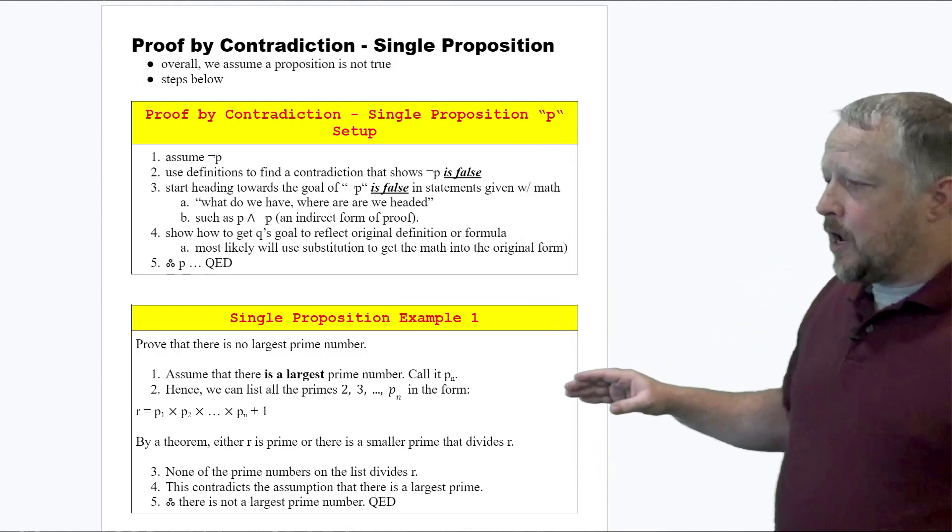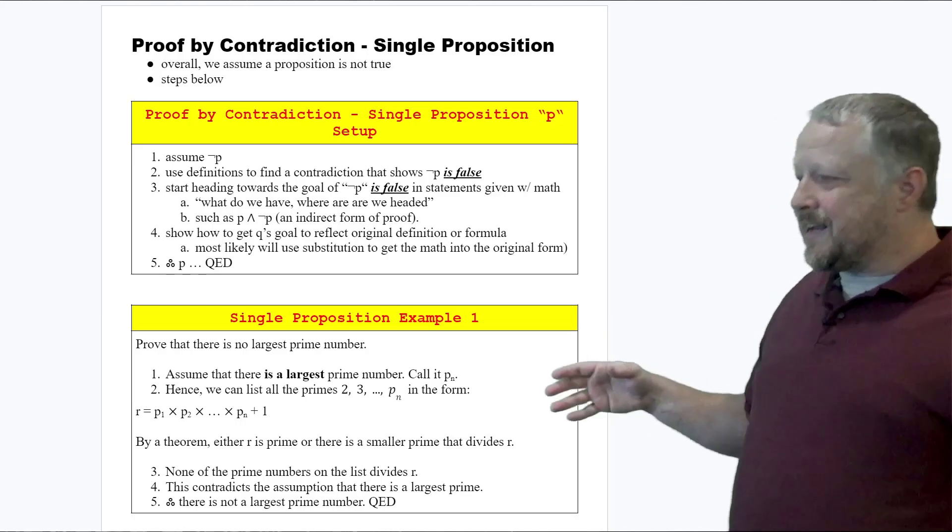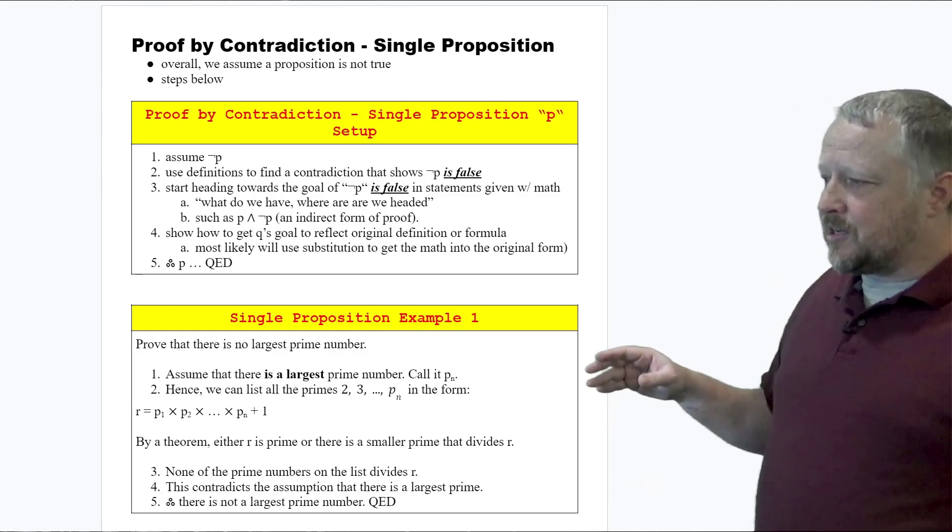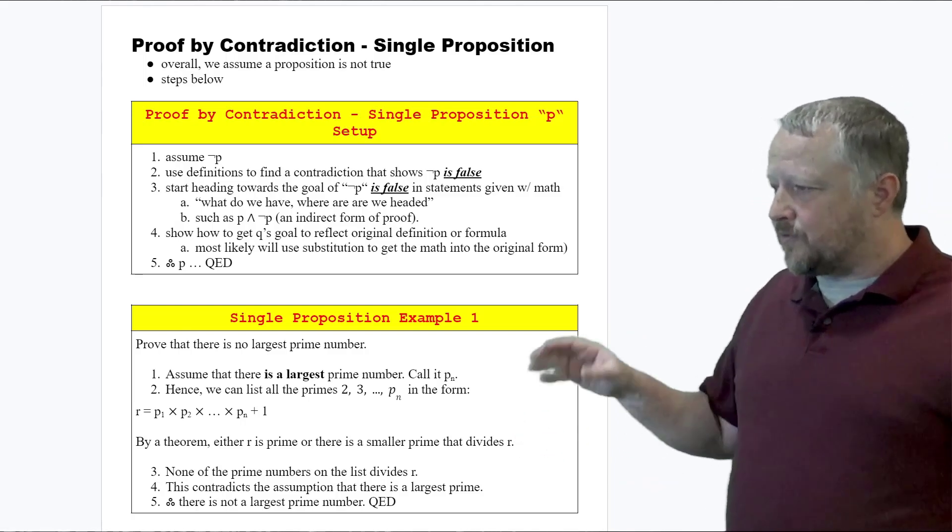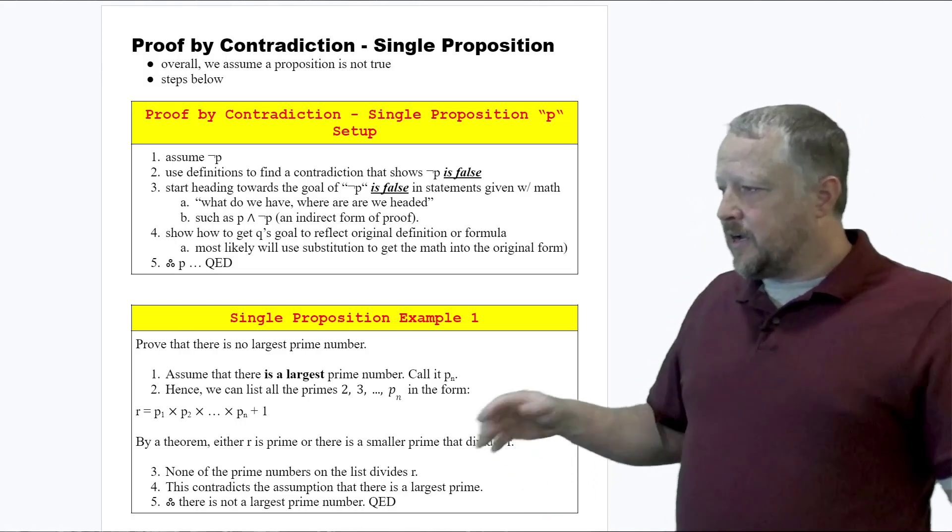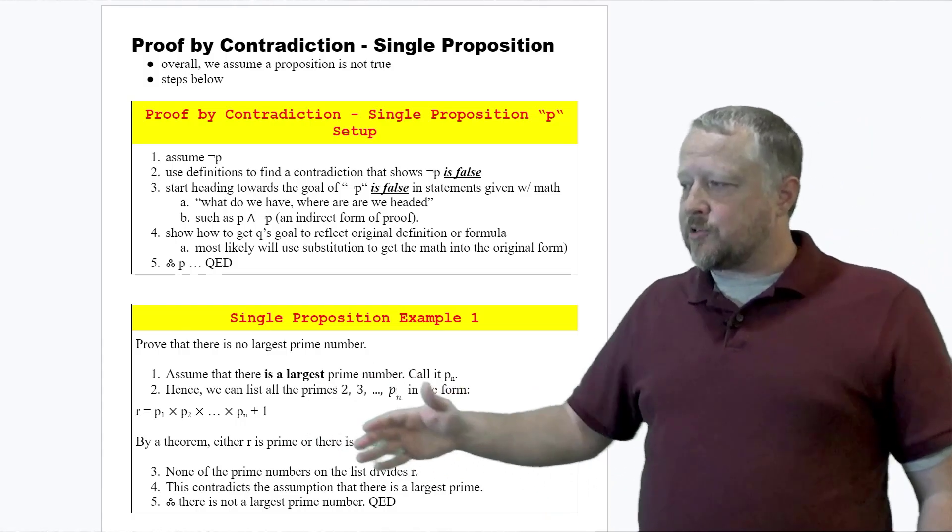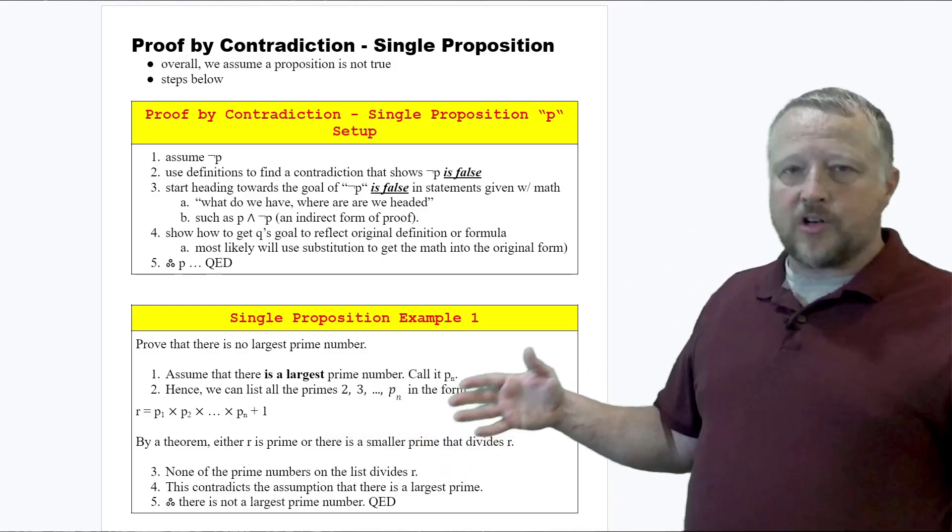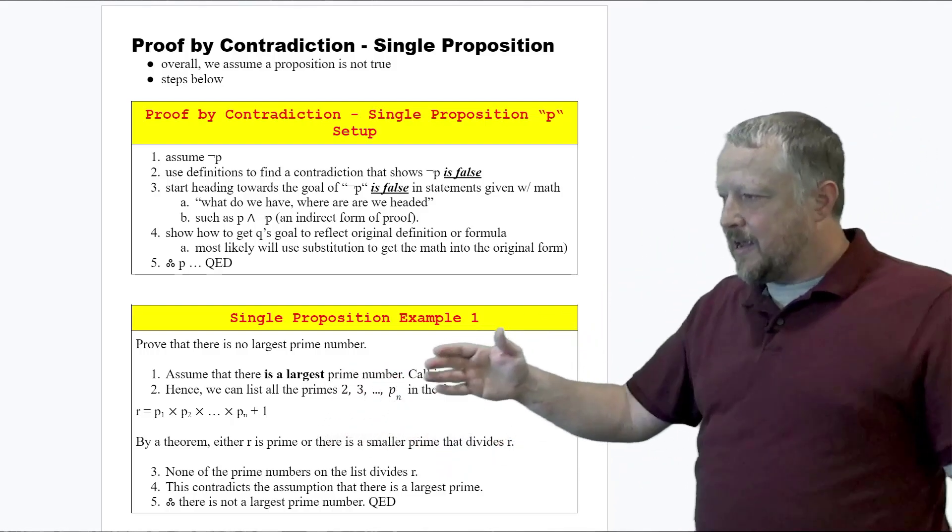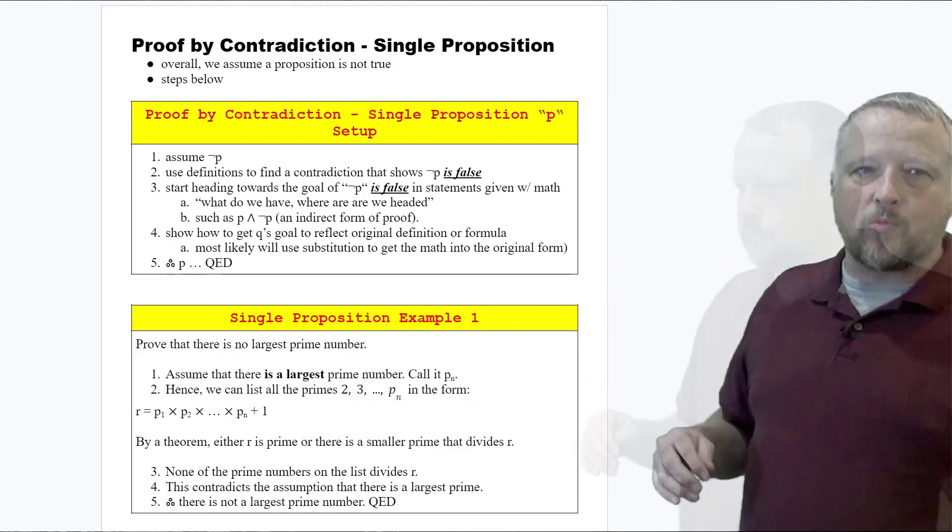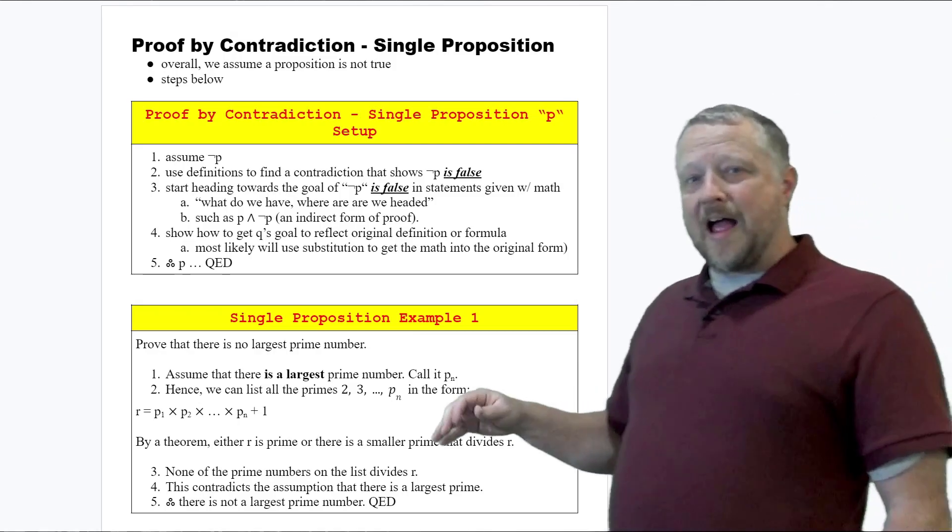Number one, assume that there is a largest prime number called p_n. Then number two, we can list all the primes 2, 3, and so on up to p_n in this form. Where did I get this from? That's the definition of all the primes. You know there's going to be a prime and then probably one more, so we added one more.